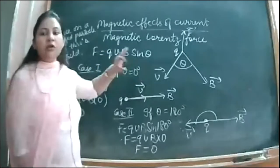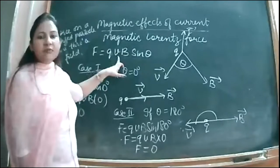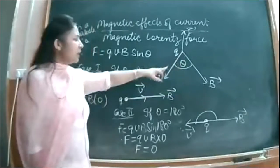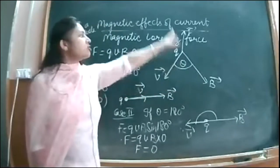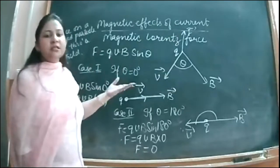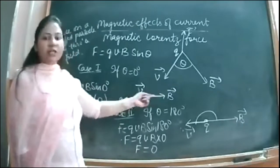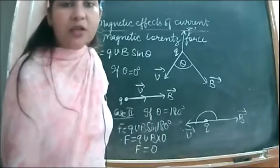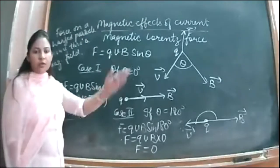You have to learn this formula. We are not going to prove this formula. Q is charge, V is velocity, B is magnetic field, and theta is the angle between velocity and magnetic field. If the charge particle moves in the magnetic field, the force will be perpendicular to the direction of motion. No force will be experienced by a charge particle if it is going parallel to the magnetic field.